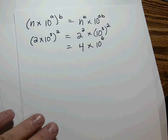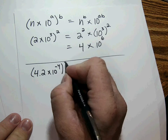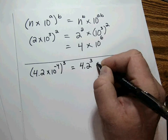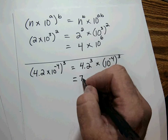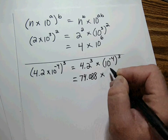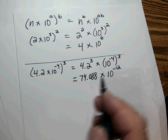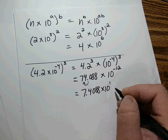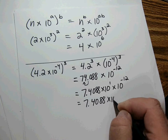Part B: (4.2 times 10 to the negative 4th) cubed. Everything gets cubed. 4.2 cubed is 74.088, and 10 to the negative 4th cubed becomes 10 to the negative 12. Since 74.088 is not in scientific notation, we correct: 7.4088 times 10 to the 1, times 10 to the negative 12, equals 7.4088 times 10 to the negative 11.